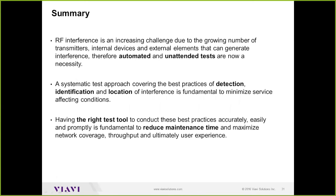Question: Regarding the automated solution, how many bearings can it measure to isolate a source? Answer: That's a question that would need to go to the design team for a specific answer. Question: What is the best way to measure in a high-density transmitter environment? Answer: If every transmitter is behaving correctly with proper filtering on both transmit and receive sides, everything should work fine even with multiple bands at one location.